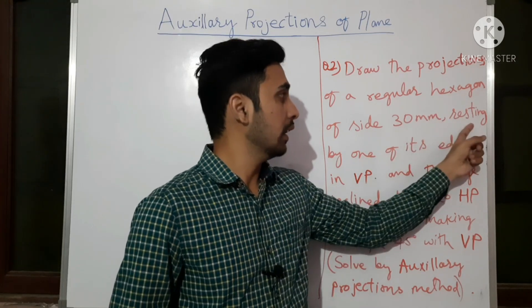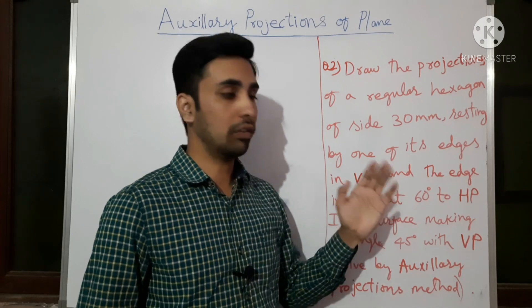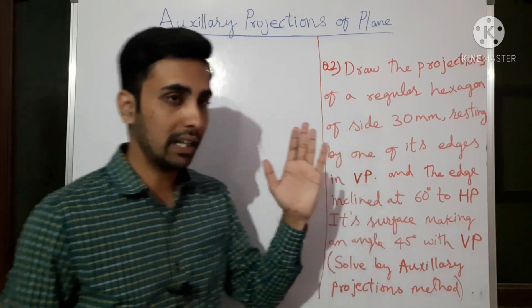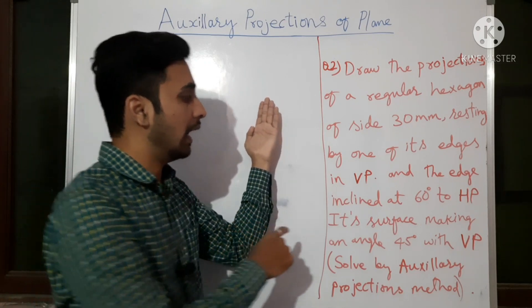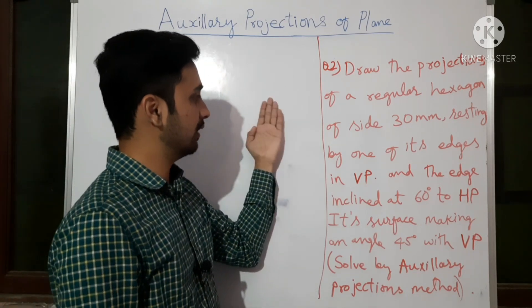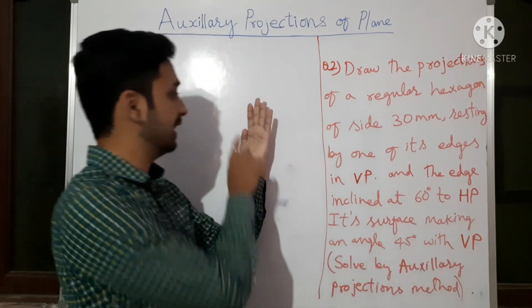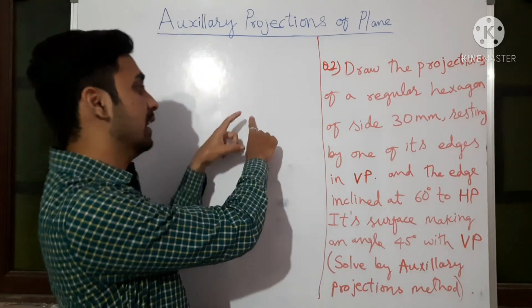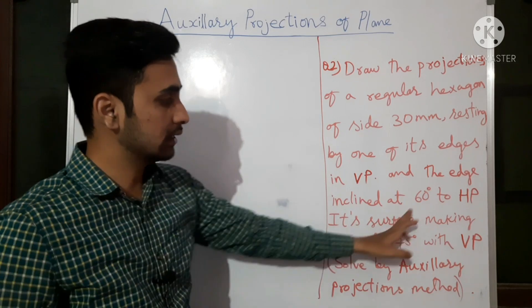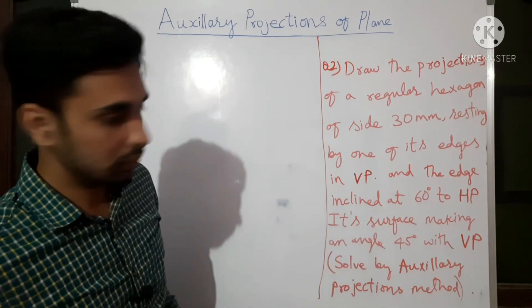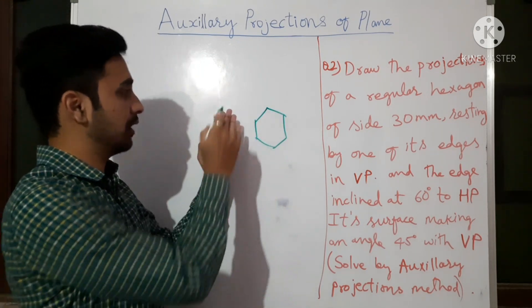Draw the projections of a regular hexagon of side 30 mm, resting by one of its edges in VP. The surface of the hexagon makes 45 degrees with VP, and the edge resting in VP makes 60 degrees with HP.